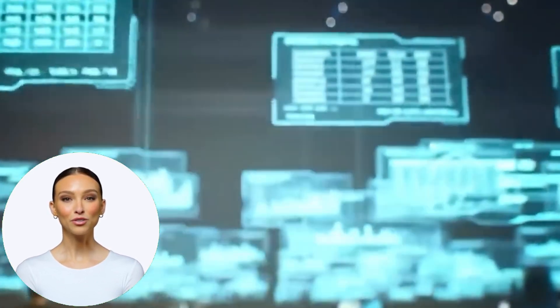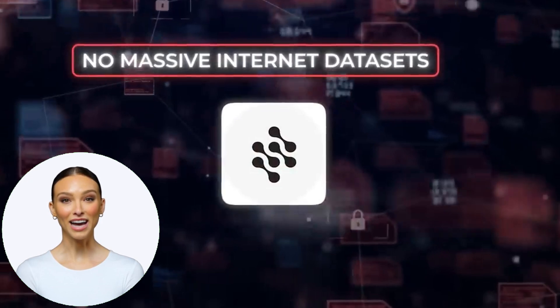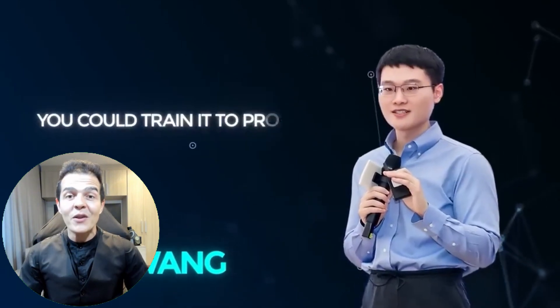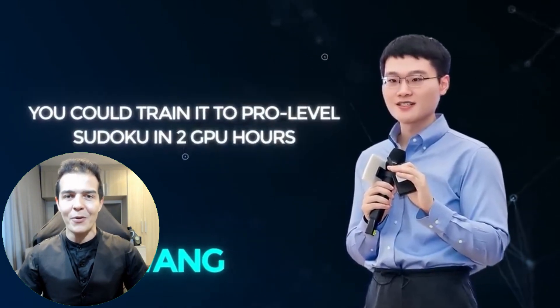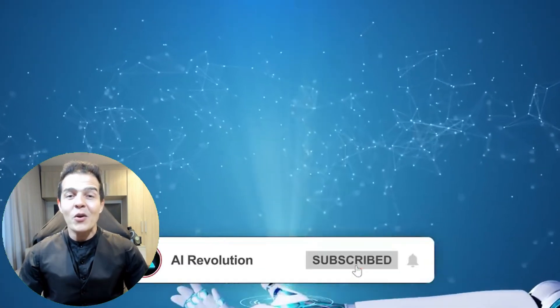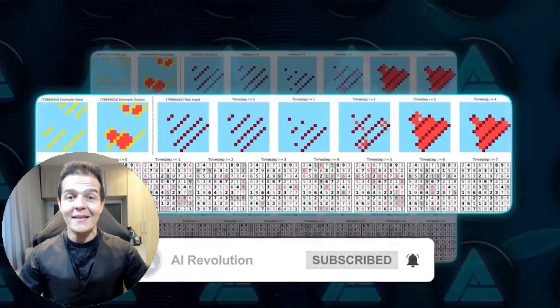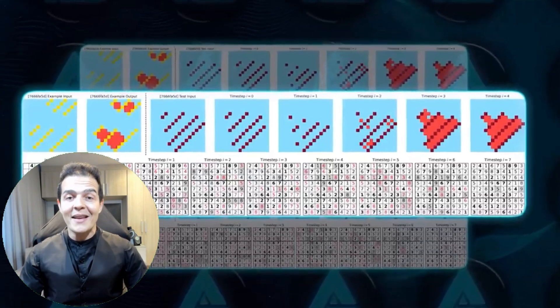And all this with the model trained with just 1,000 examples per task. That's right. No massive internet data sets. No months of pre-training. Guan Wang, one of the creators, said you could train it to be a Sudoku Pro in just two hours of GPU. Two hours. That's not just efficient. It's ridiculous.